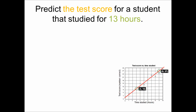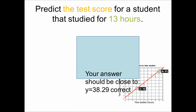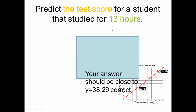Now that you have had a chance to try this out, the answer should be close to 38.29 correct answers. So if a student studied for 13 hours, their answer should be close to 38.29. Note that our graph doesn't go up to 13 hours, so we're using the line to predict what a student's score would be if they studied for more hours. If you didn't get 38.29, please follow along as we solve for it.